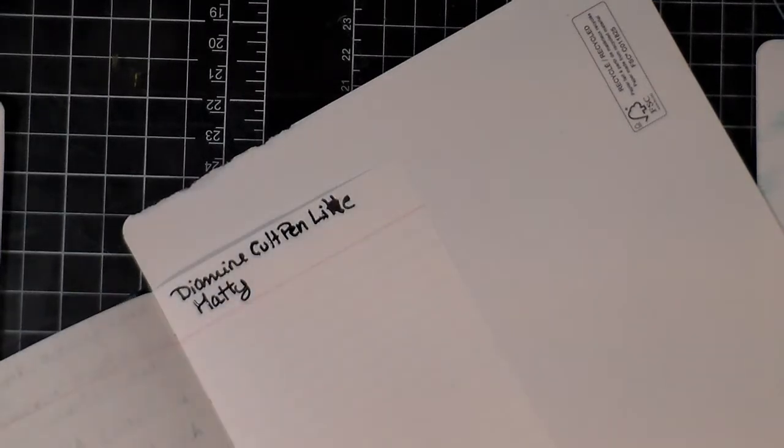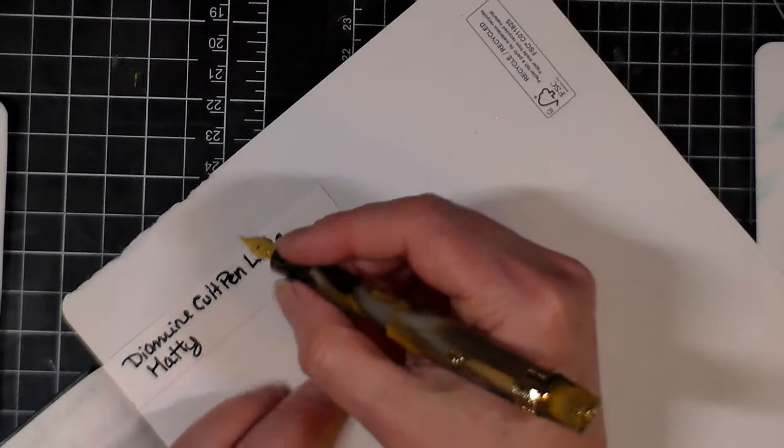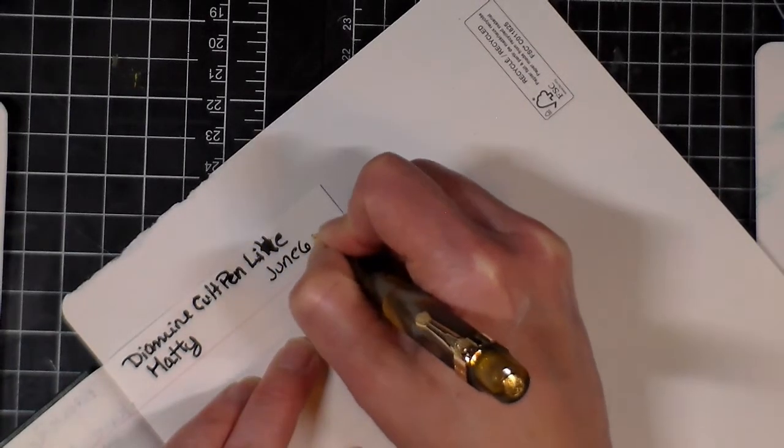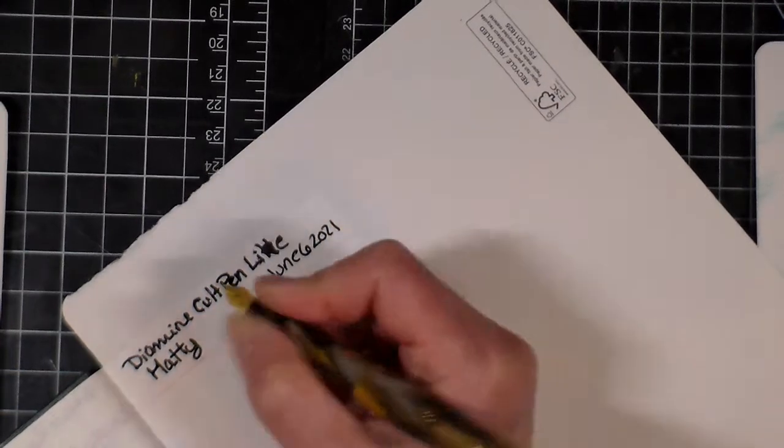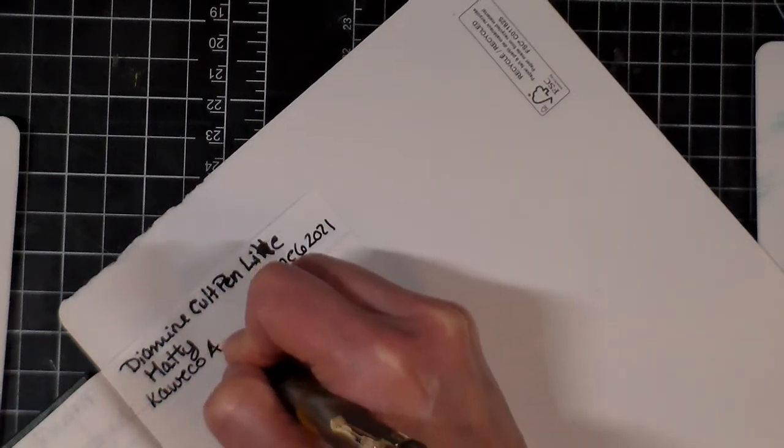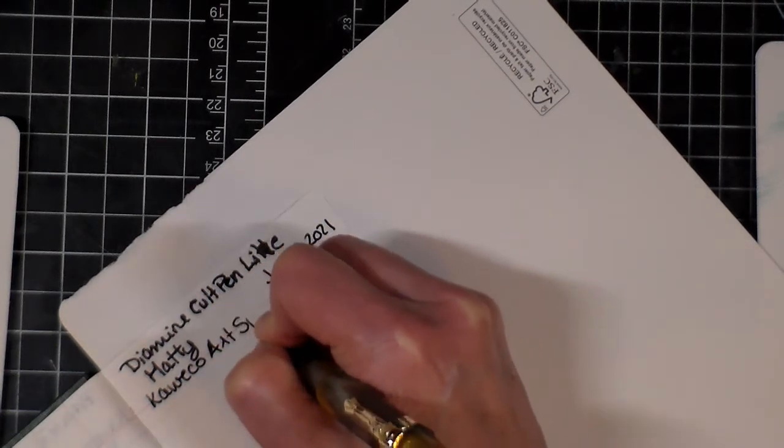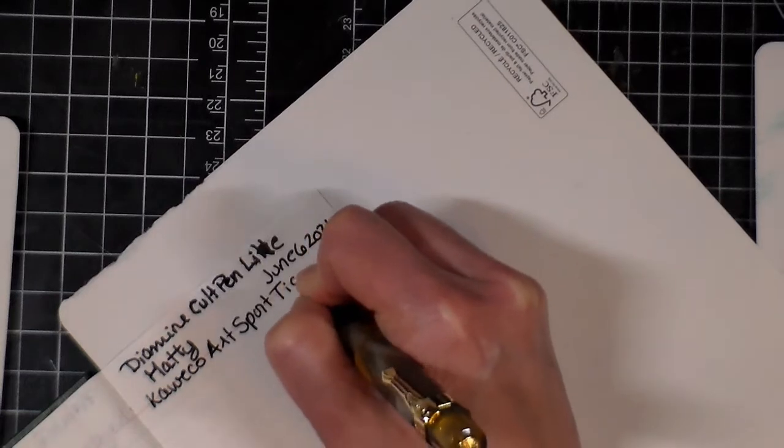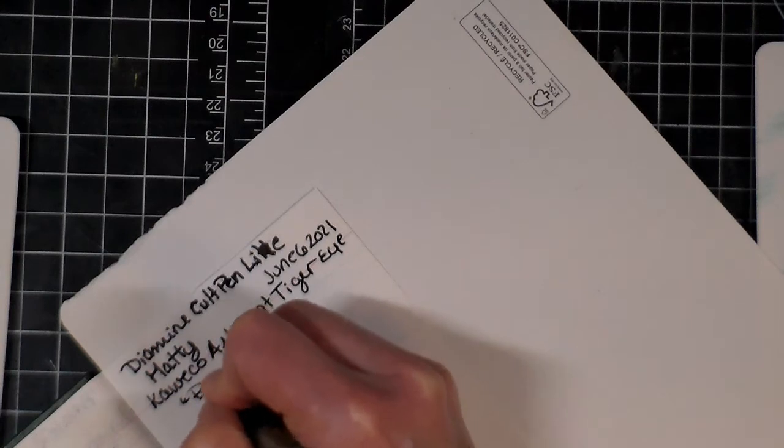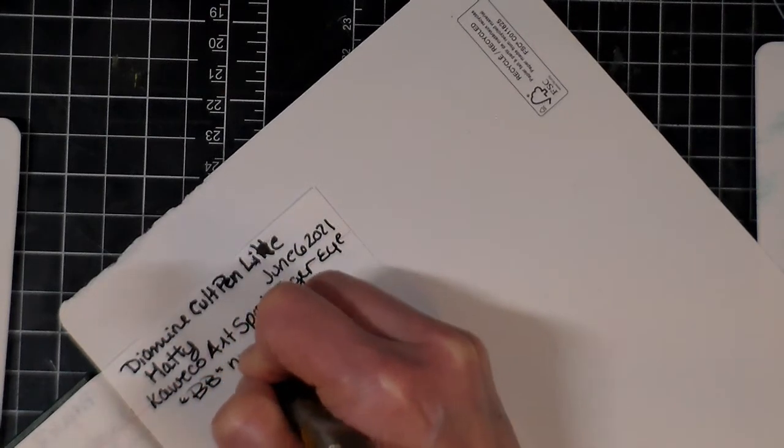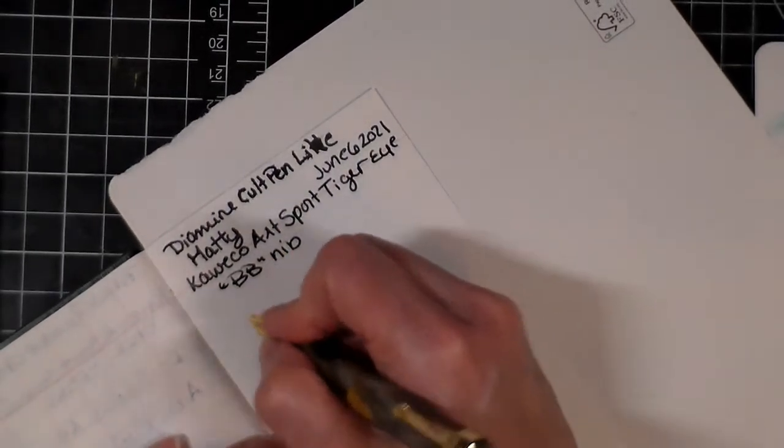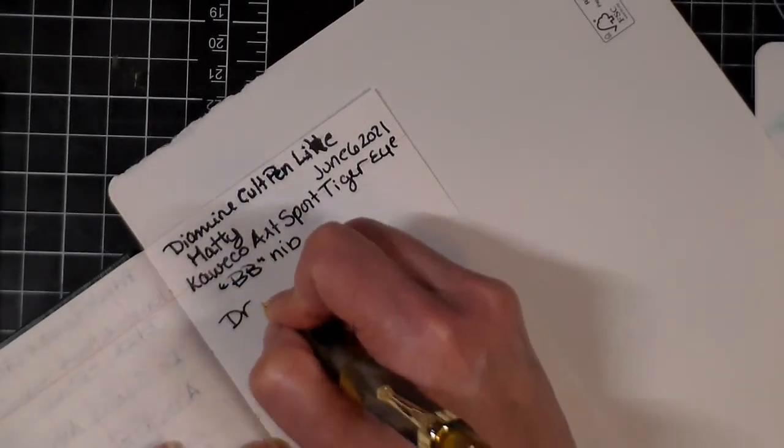Yeah, need to write quickly. So June 6, 2021 and I'm using my Kaweco Art Sport Tiger Eye with a double broad nib. Okay so then we're doing Dr. Seuss ABC.